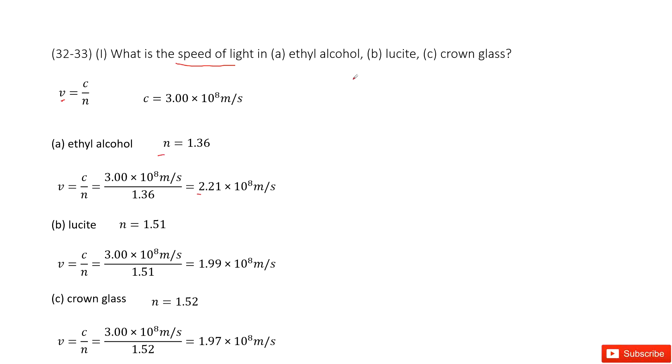The second object is lucite. We check the textbook. We know the n is 1.51. Input c and n, get the final answer there.